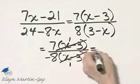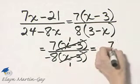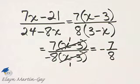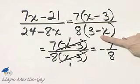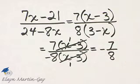I'm left with 7 over negative 8, which I can write as negative 7 over 8. Don't forget, these are opposites of each other, so if you divide them out, you do have that factor of negative 1. Completely simplified, then, I have negative 7 over 8.